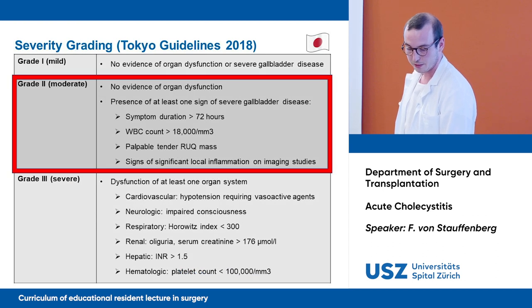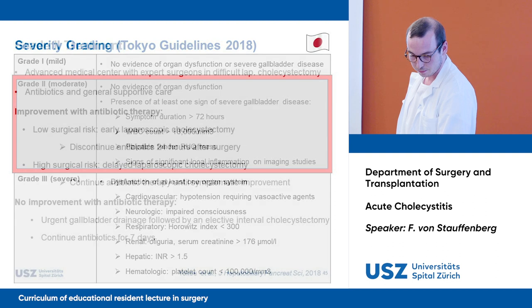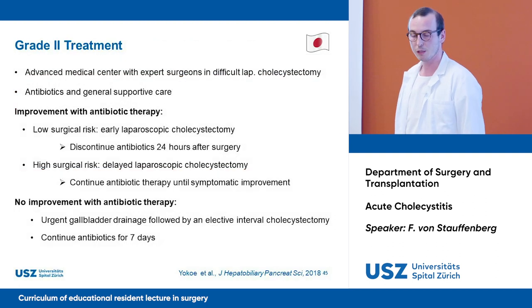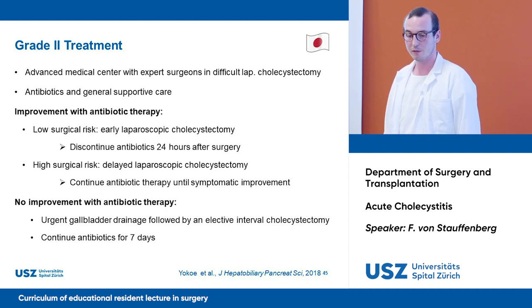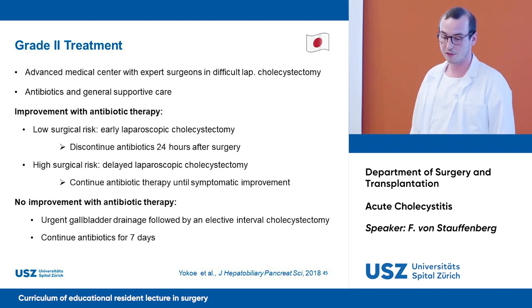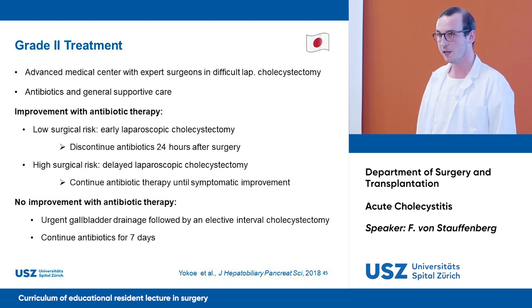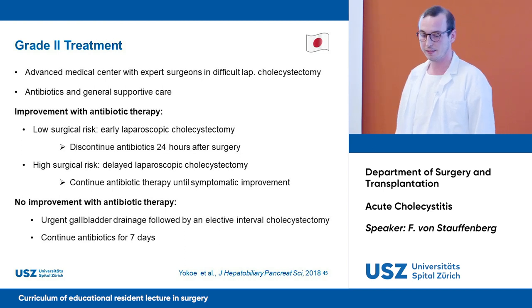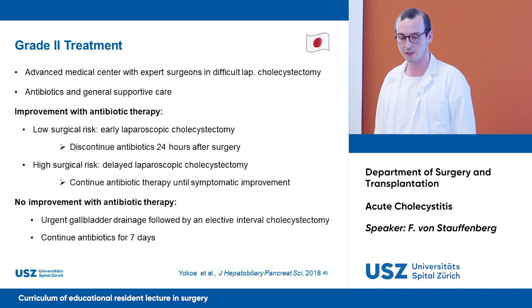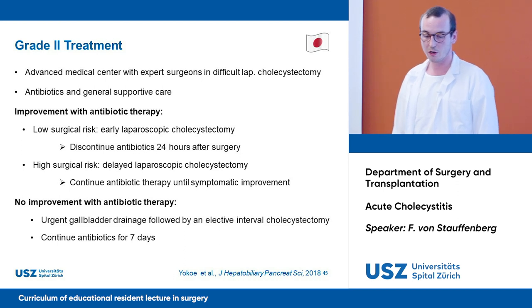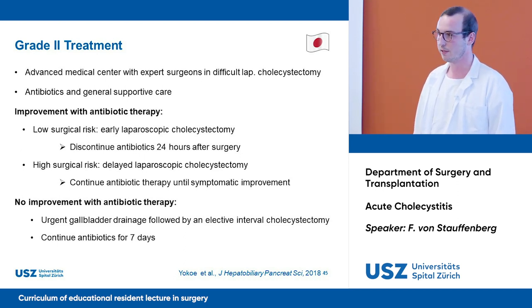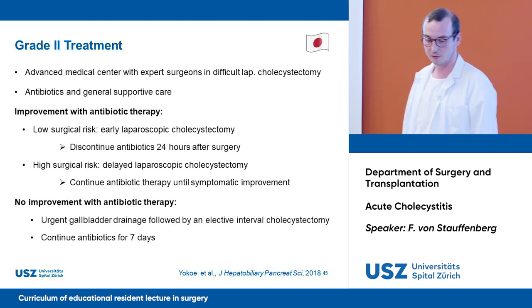In Grade 2, treatment should be given in an advanced medical center with expert surgeons capable of difficult laparoscopic cholecystectomy. Administer antibiotics preoperatively in any case. If there is improvement with antibiotic therapy, low surgical risk patients should get early laparoscopic cholecystectomy with antibiotics discontinued 24 hours after surgery. High surgical risk patients should have delayed laparoscopic cholecystectomy with initial antibiotics continued until symptomatic improvement. If there is no improvement with initial antibiotic therapy, perform urgent gallbladder drainage followed by elective interval cholecystectomy, continuing antibiotics for seven days.